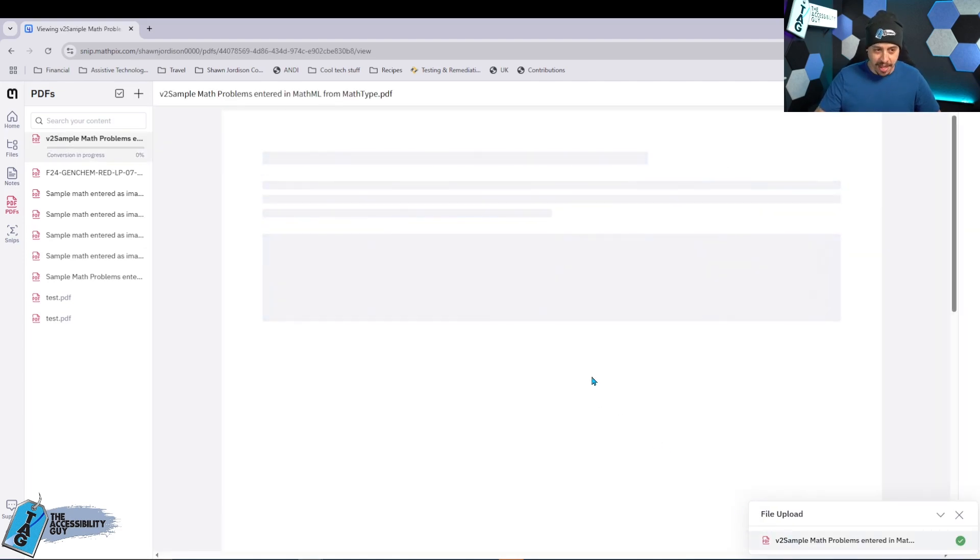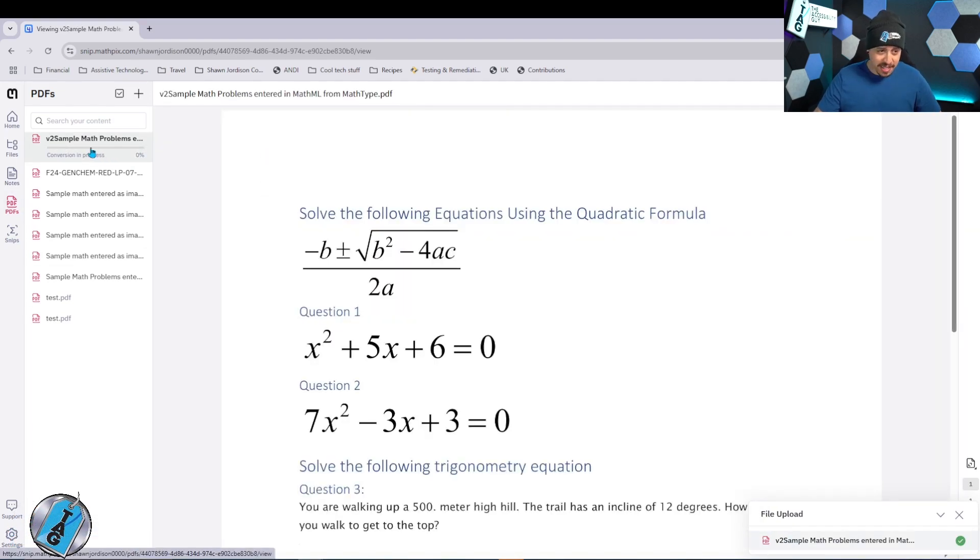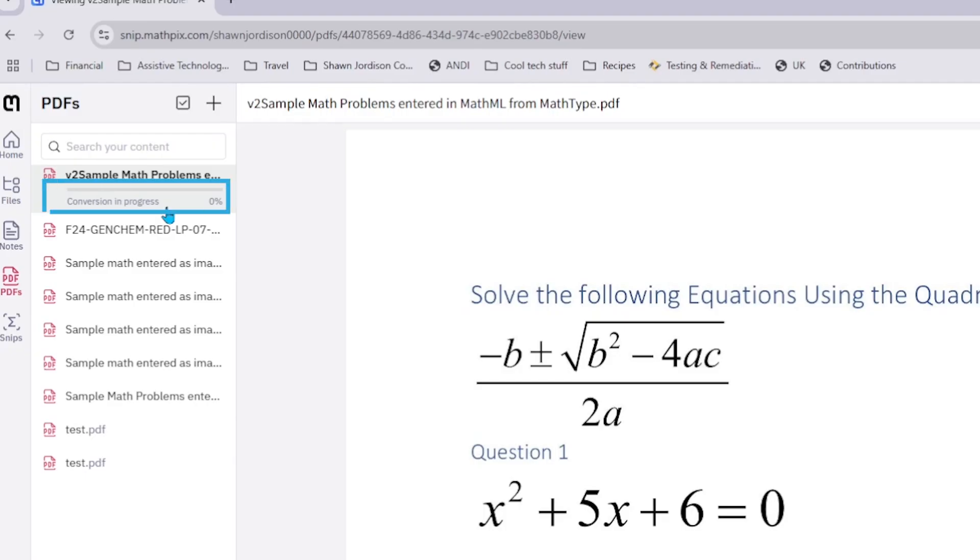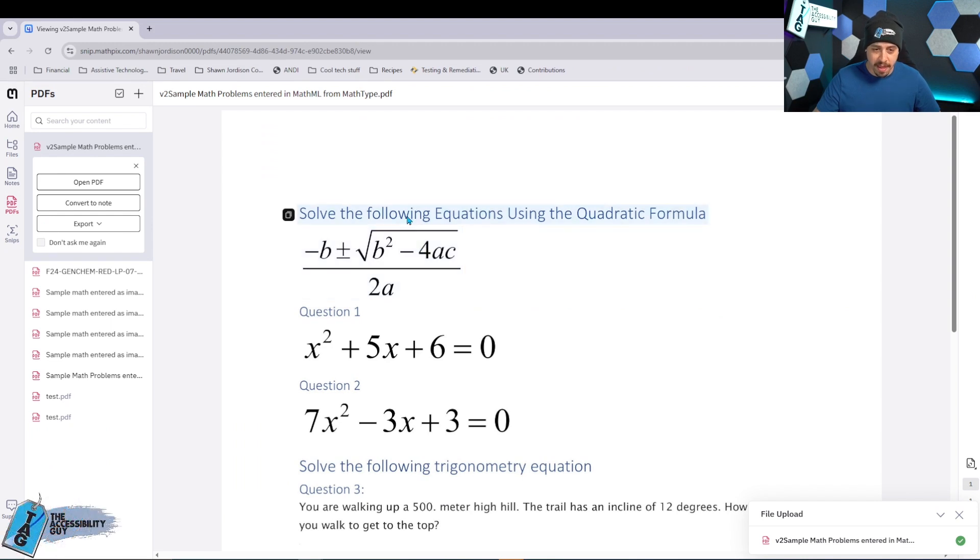All right, so it now uploaded and I can select the file and it has it over here in the PDF editor. And it's currently saying a conversion in progress. All right, here's the document. And we now have like the data split up.